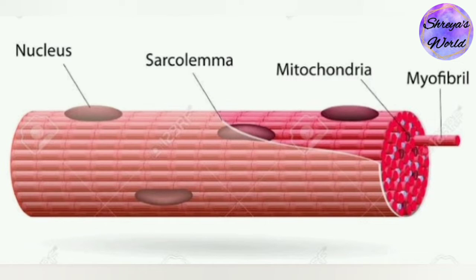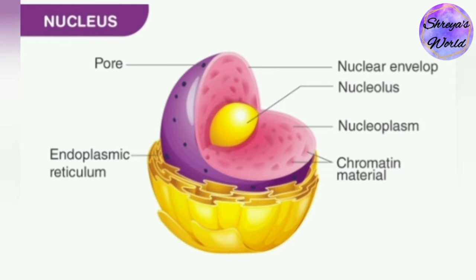And a few others, including muscle cells, have many nuclei. The main structures making up the nucleus are the nuclear envelope, a double membrane that encloses the entire organelle and isolates its content from the cellular cytoplasm, and the nuclear matrix, a network within the nucleus that adds mechanical support, much like the cytoskeleton supports the cell as a whole.